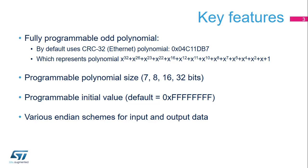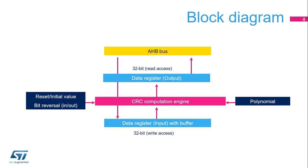The CRC calculation unit integrated in the STM32 features a fully programmable odd-value polynomial with a programmable size of 7, 8, 16, or 32 bits. The initial value is also fully programmable, allowing for very flexible run-time CRC code generation. The peripheral can be configured to support the big or little endian formats of the input and output data, supporting various communication protocols. The CRC calculation unit is connected to the AHB bus interface for optimal performance.